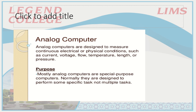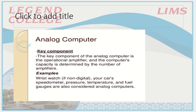Analog computers are mostly special purpose — they are normally designed to perform some specific tasks, not multiple tasks. The key component of analog computers is the operational amplifier, and the computer's capacity is determined by the number of amplifiers. In our analog signals, we have the power of amplification.